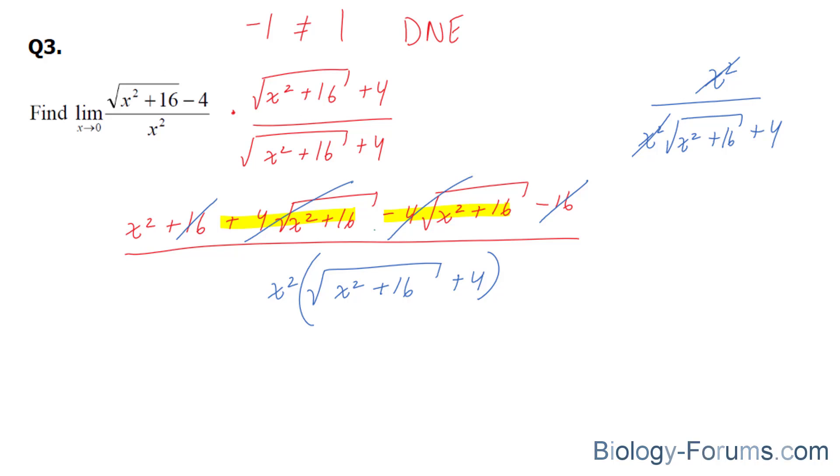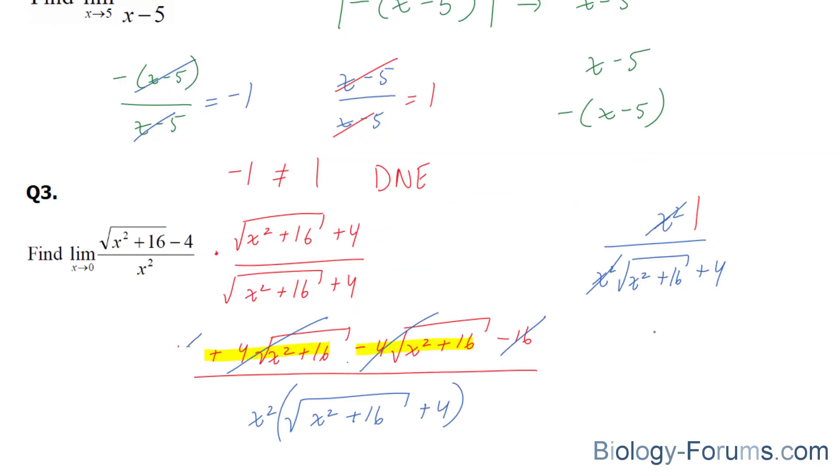Now, if we were to apply the limit of x approaching 0, we would end up with 1 over, where 0 is applied to the x squared plus 16, which is equal to 1 over the square root of 16, which is 4, plus 4 is 8, and that's it.